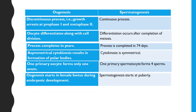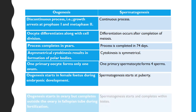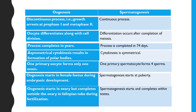Oogenesis starts in the female fetus during embryonic development, whereas spermatogenesis starts at puberty. Oogenesis is completed in years as it starts before birth but completes after puberty, whereas spermatogenesis is completed in 74 days. Oogenesis starts in the ovary but gets completed outside the ovary in the fallopian tube during fertilization, whereas spermatogenesis starts and gets completed within the testes only.